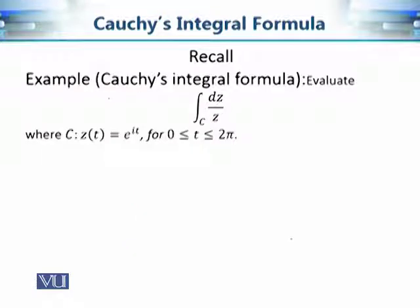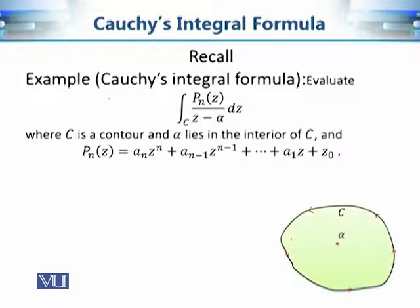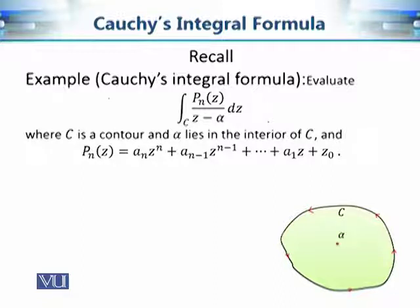So far, we have evaluated dz over z along a positively oriented circle. We have also evaluated P_N(z) over (z minus alpha), where P_N(z) is a polynomial of degree N. We used Cauchy's integral formula in this case, and since there is no condition on N, using other methods for evaluation of these contour integrals would be a very computationally demanding task.